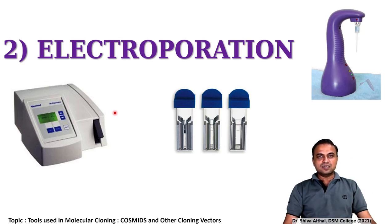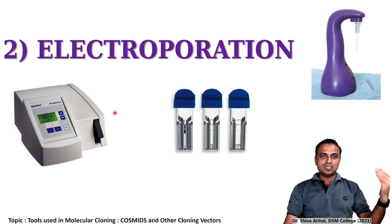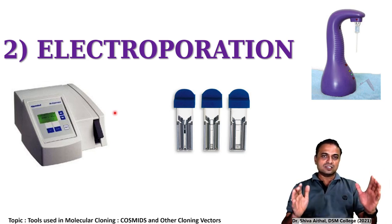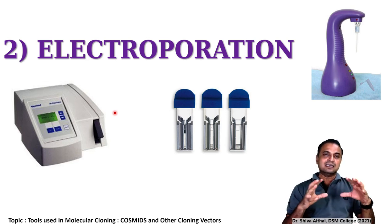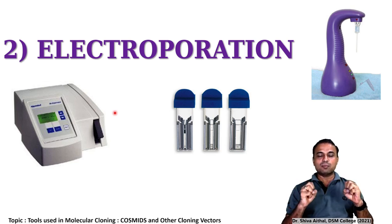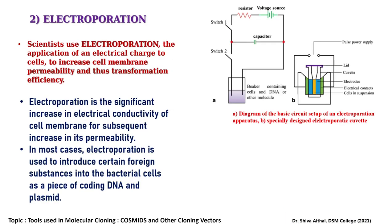Now let us see the second method: electroporation. This employs electric current. These two methods have been chosen for your curriculum because of the diversity of approach — one is chemical, this is physical. Electroporation is a technique where we use electric currents instead of a chemical or natural ability. We introduce an electric current where the electric charge increases the cell membrane's permeability and thus the transformation efficiency. This is a diagram of a basic circuit setup of the electroporation apparatus.